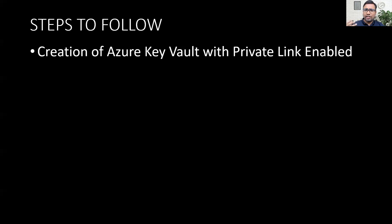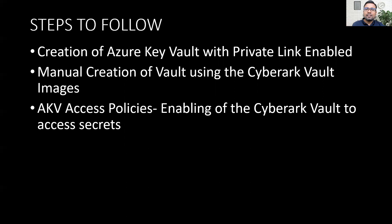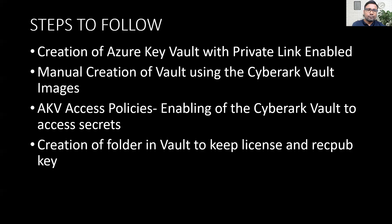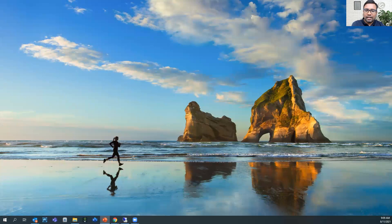Step one: we will create Azure Key Vault and enable the private link option during creation. Step two: using the CyberArk Vault images, we will create the CyberArk Vault virtual machine. Step three: once the CyberArk Vault is created, we will go to the Azure Key Vault access policies and enable the CyberArk Vault VM to communicate with AKV and perform certain actions. Step four: we will copy the license file and recovery public key into the CyberArk Vault VM. Step five: we will perform the Vault registration.